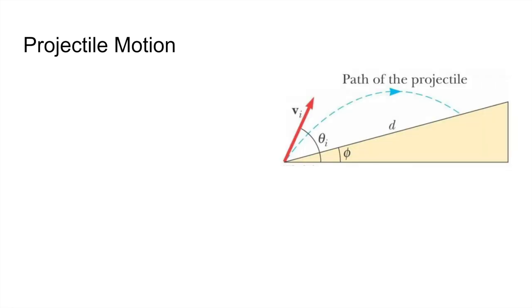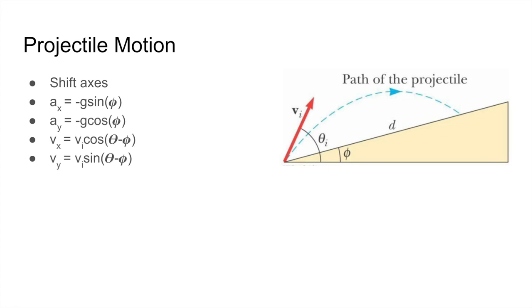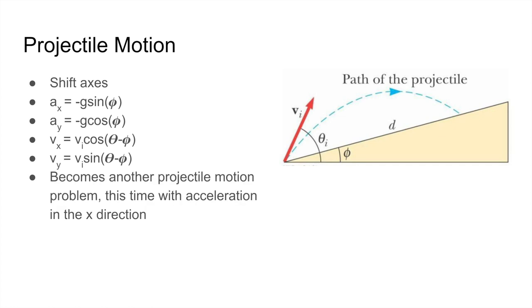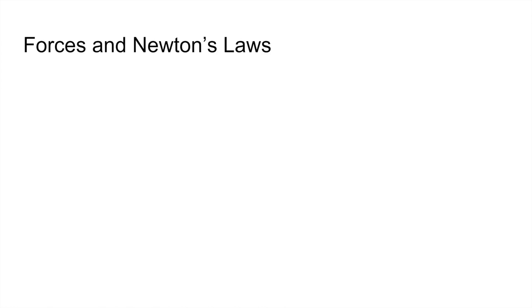Projectile motion doesn't always have to be on a level surface. We'll examine what happens when a particle is launched on an incline of angle phi. There's still constant acceleration straight downward and no acceleration left or right, so we shift the axes so that the x direction is along the plane and the y direction is normal to it. We can then get the x acceleration, y acceleration, x velocity, and y velocity — this becomes another projectile motion problem, except with acceleration in the x direction, and you can solve it quite easily.